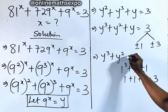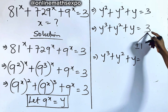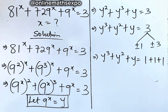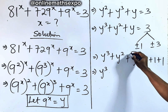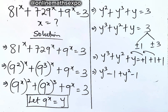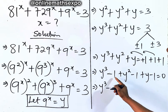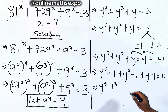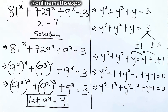We have y cubed plus y squared plus y equal to 3, and 3 is 1 plus 1 plus 1. Moving everything to the left side — this is positive, so moving it gives negative 1 — we have y cubed minus 1, plus y squared minus 1, plus y minus 1, equal to 0. We group these pairs together: the first two are together, the next two are together, and the last two are together.